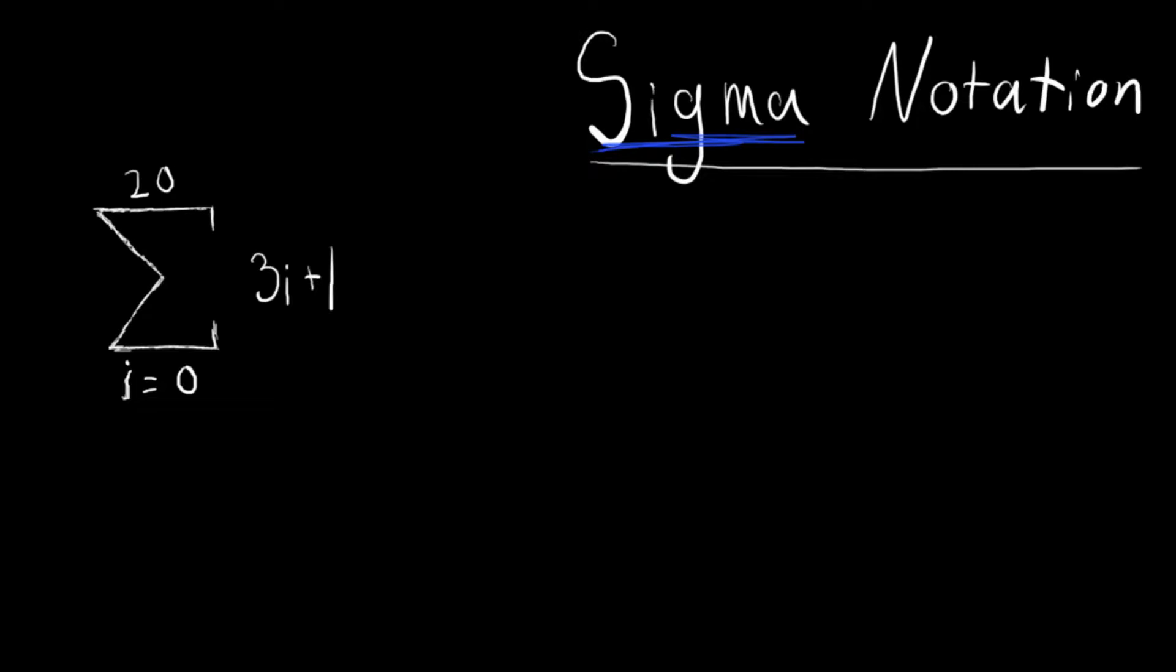Now, this sigma is basically just an operator, it's just a symbol. Down here at the bottom, we have an i equals 0, and the i can honestly just be any number. It can be an a, it can be a k, it can be a theta, it can be a zh, it can really be whatever it was.